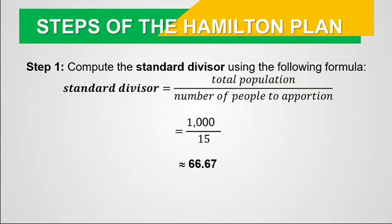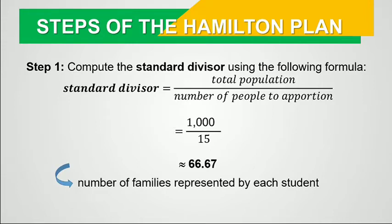Let's follow Hamilton's plan of apportionment. The first step is to compute the standard divisor: total number of families divided by the number of classmates to be apportioned. The total number of families is 1,000 and the number of classmates is 15. So 1,000 divided by 15 is approximately 66.67. This means for every student, there should be approximately 66.67 families to be distributed with food packs.